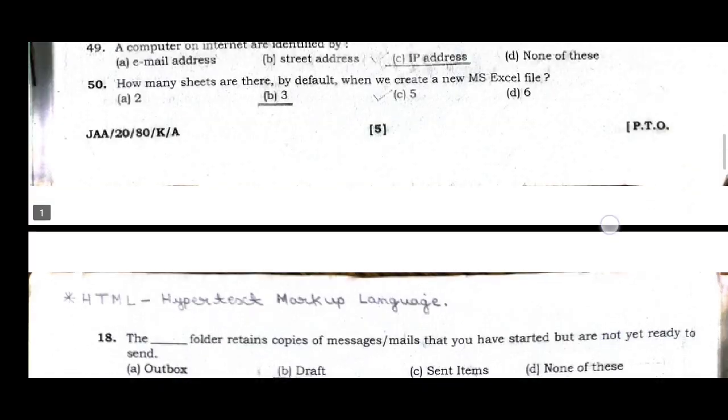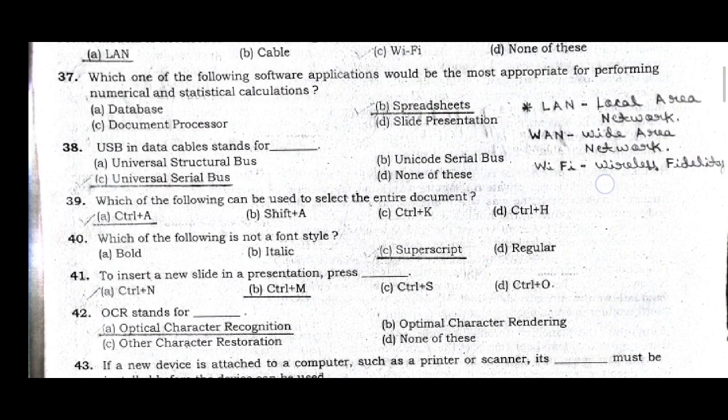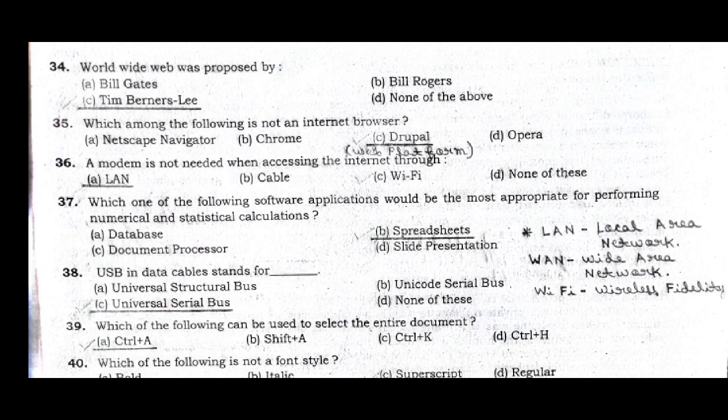Question 34: The worldwide web was proposed by Tim Berners-Lee and is abbreviated as WWW. Question 35: Which among the following is not an internet browser? The answer is Drupal — Drupal is a web platform, not a browser. Netscape Navigator and Chrome are browsers.